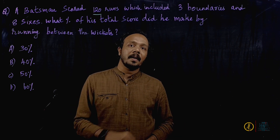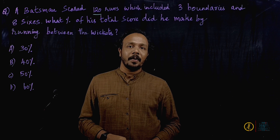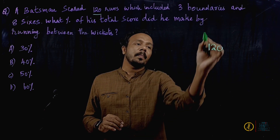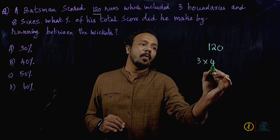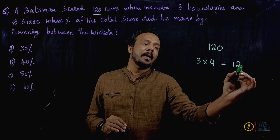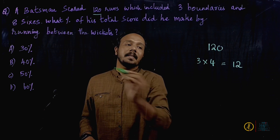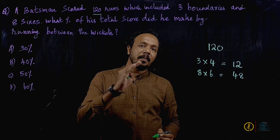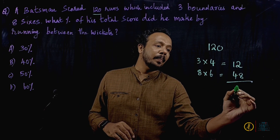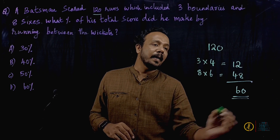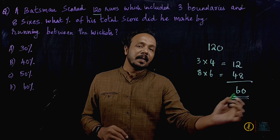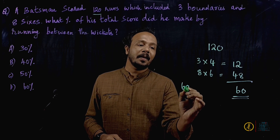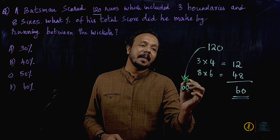First, let's calculate: 3 boundaries × 4 = 12 runs from boundaries. 8 sixes × 6 = 48 runs from sixes. Total from boundaries and sixes = 12 + 48 = 60. So runs made by running between wickets = 120 − 60 = 60.